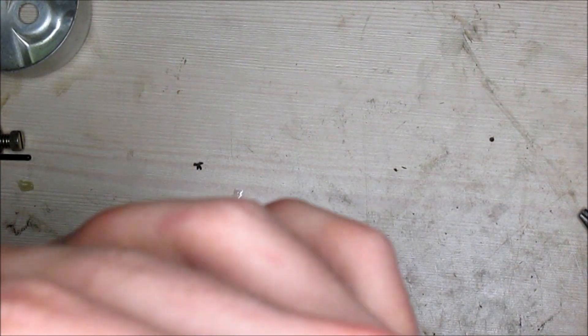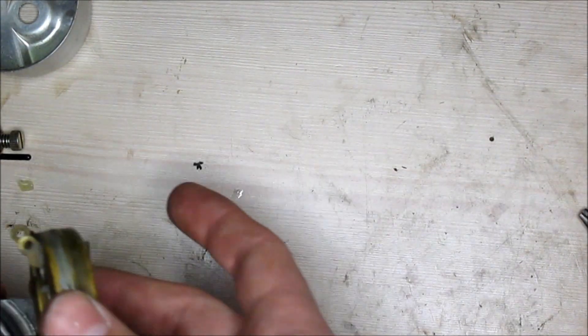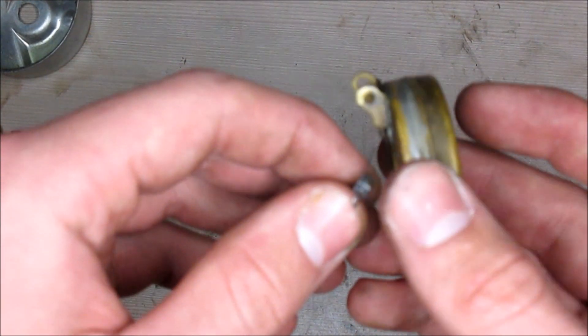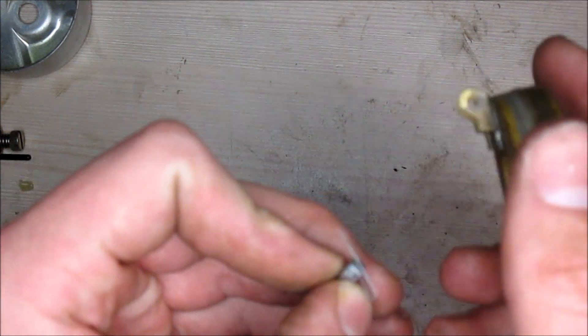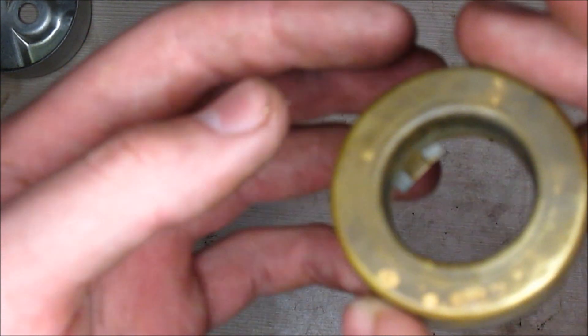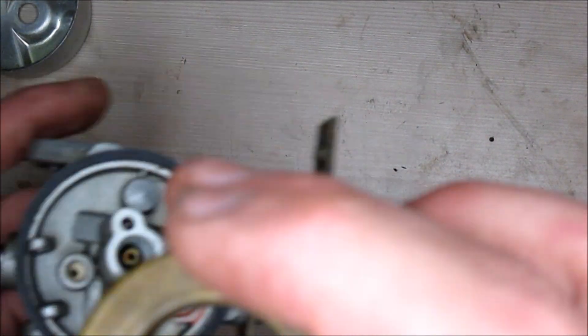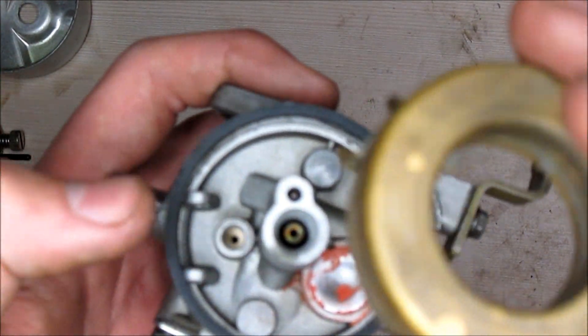The next thing you want to do is assemble the float onto the carburetor. But before we do that, we want to put our needle onto this little catch down here and align it to the center. Just like that. And then we want to align the needle itself and put it in this small hole on the carburetor itself.